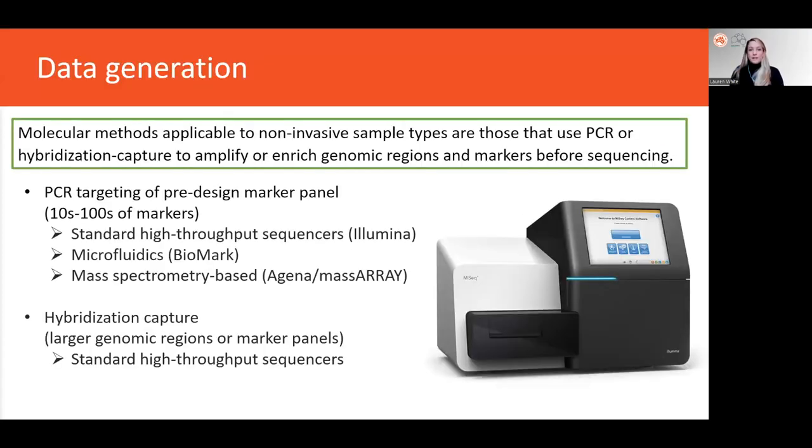After capture, the captured DNA can be prepped and sequenced on the standard high throughput sequencers. These methods are highly flexible. They can target any genomic region of any size but they can be very expensive. Synthesizing the baits is costly and sequencing requirements especially for degraded samples is substantial.